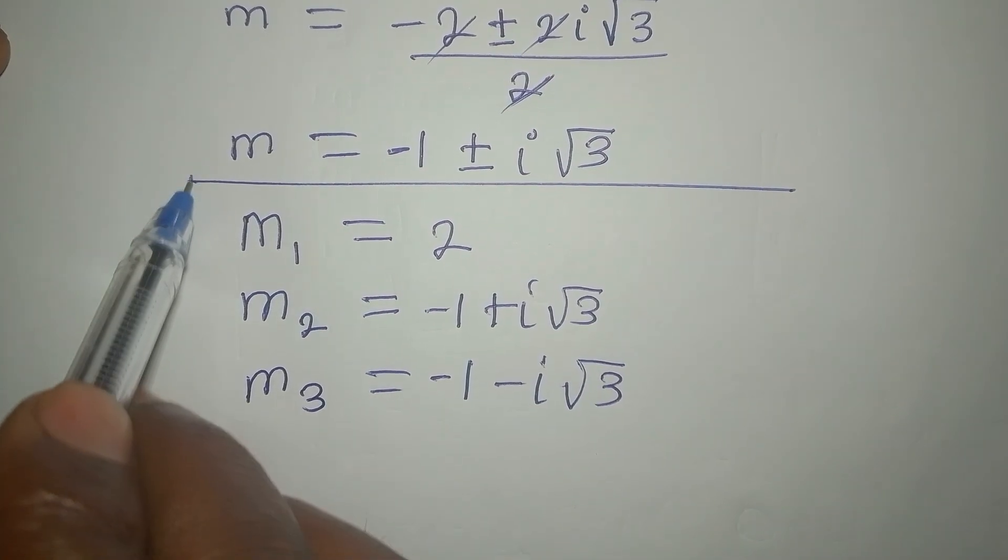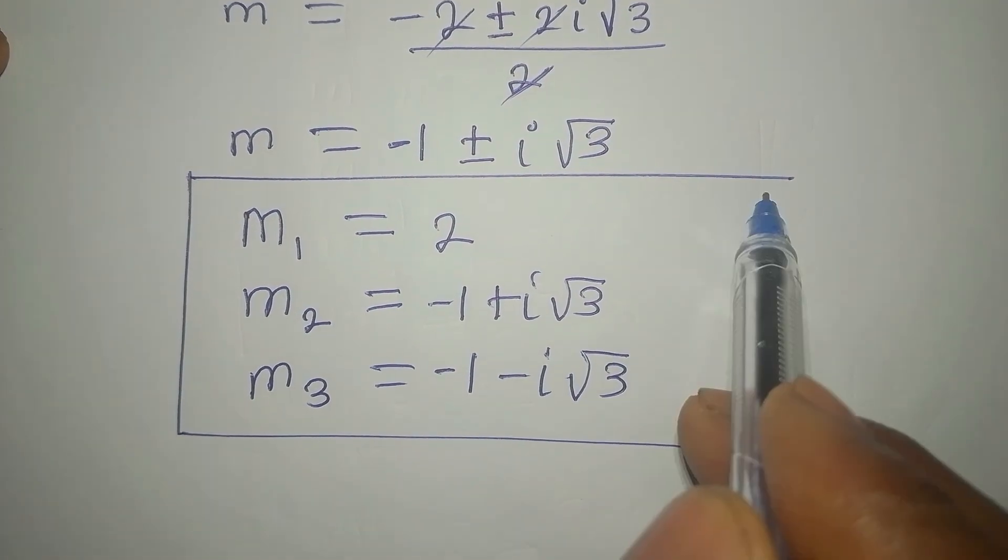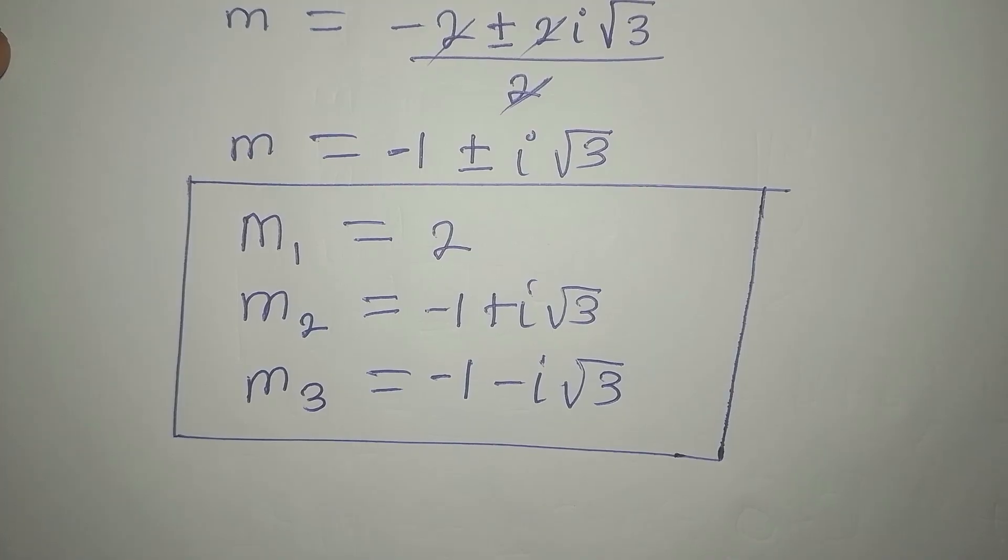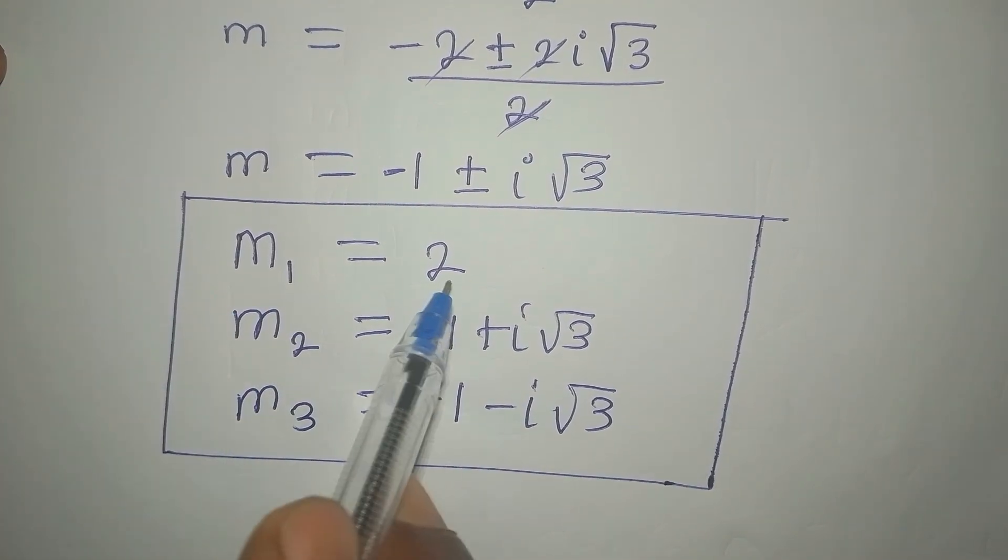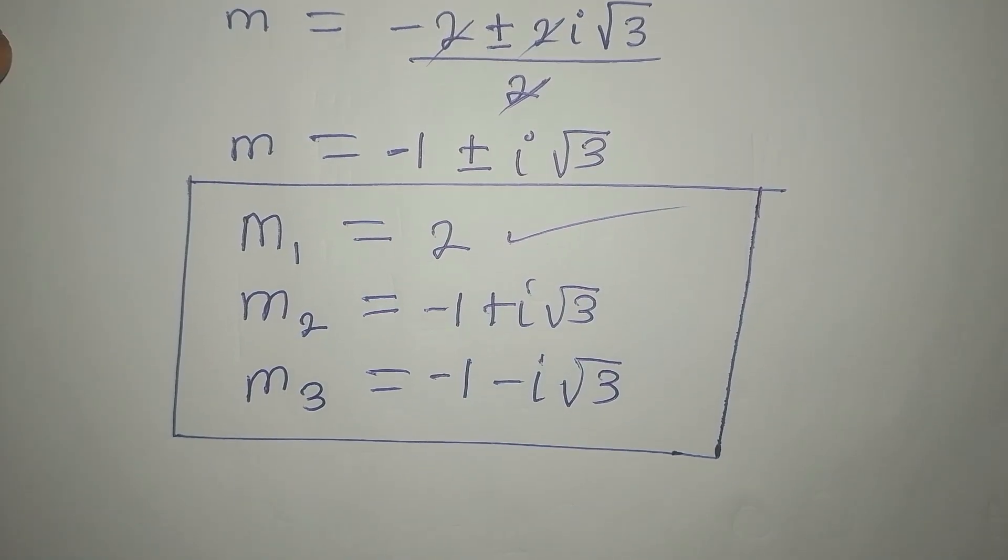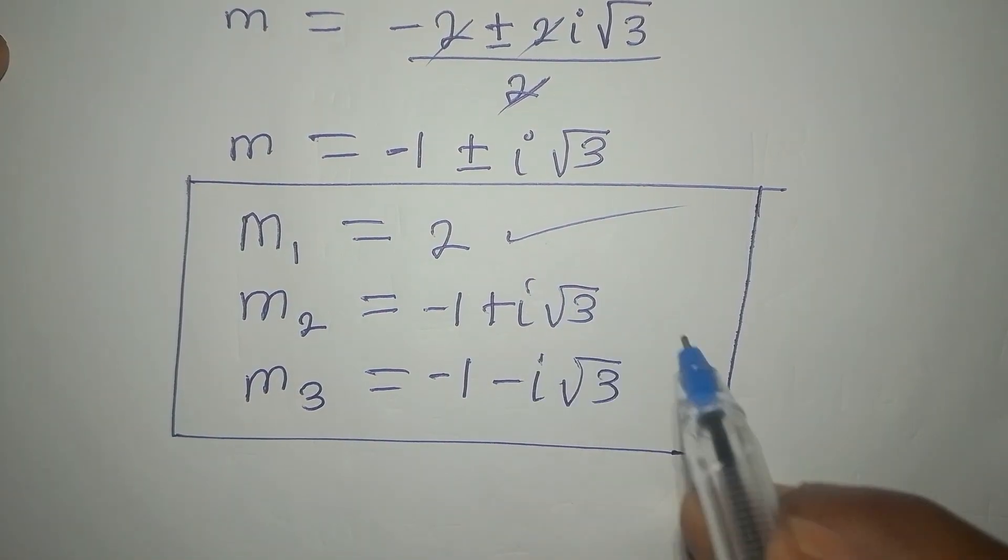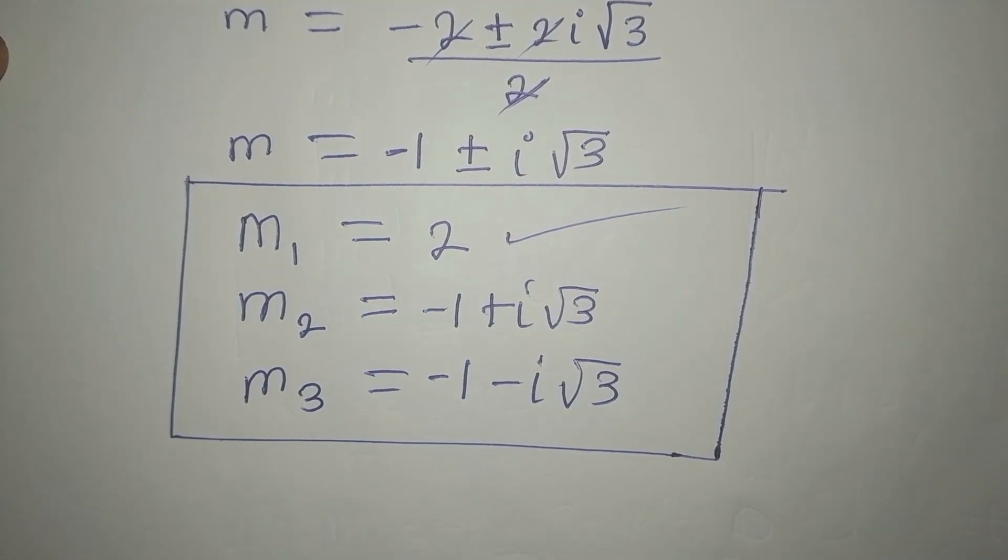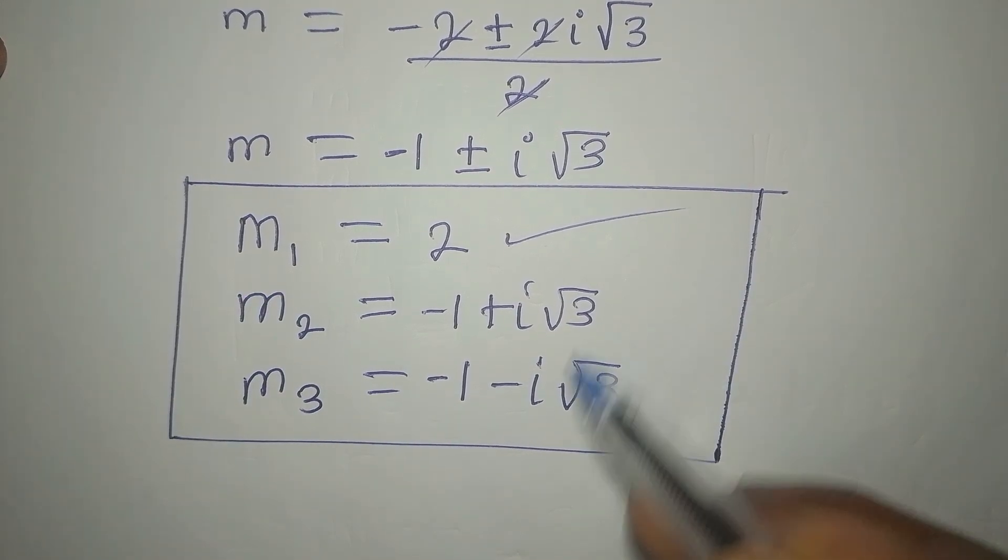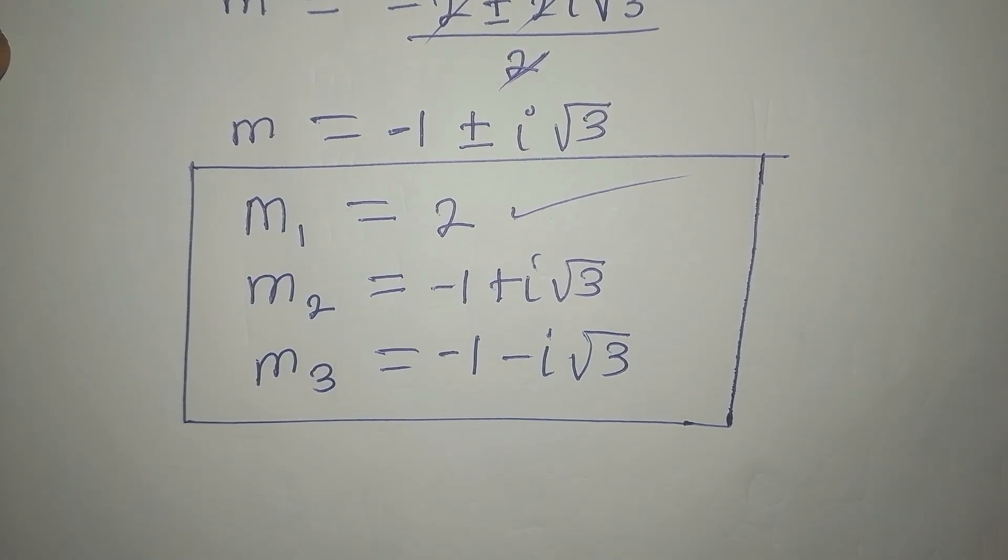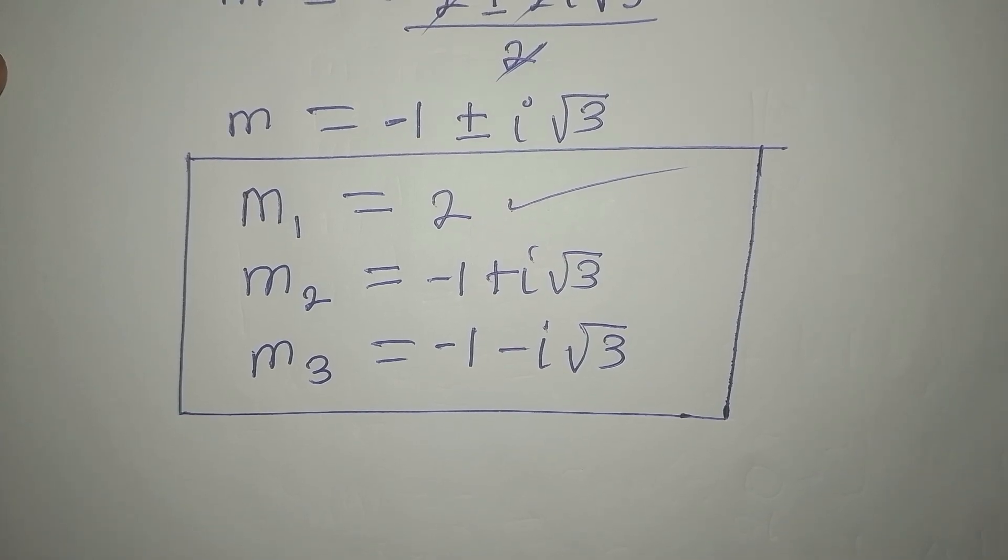So by this, we have solved this problem into detail. If we stopped at getting m to be equal to 2, we'll have only one solution. But trust me, there are three solutions. Only one is real, and that is m1 equals 2. These other two are imaginary solutions. Thank you for watching.